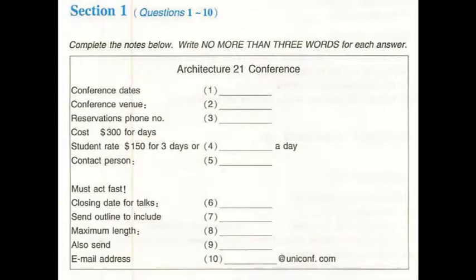And what's the registration fee? Individual fees are $300 for the three days, or $120 a day if you only wanted to attend for one day. Are there any student concessions? Oh, sure. There's a 50% concession for students, and that's $150 for the three days, or $60 a day.